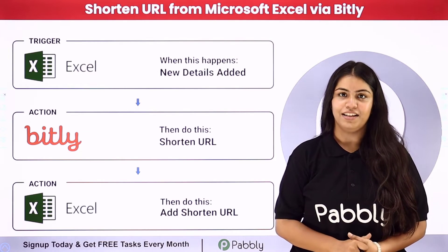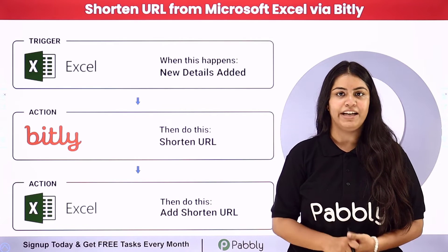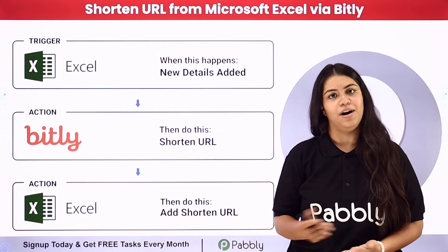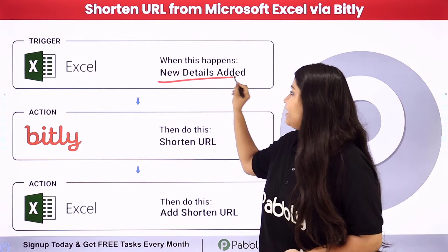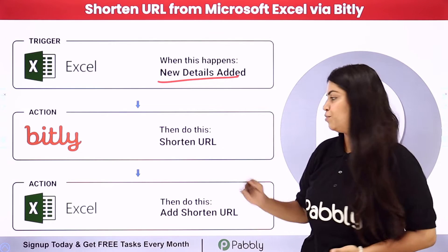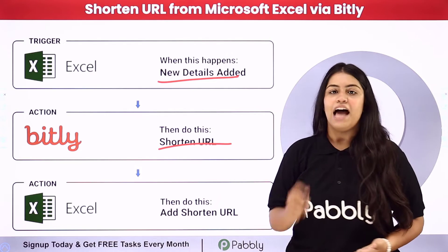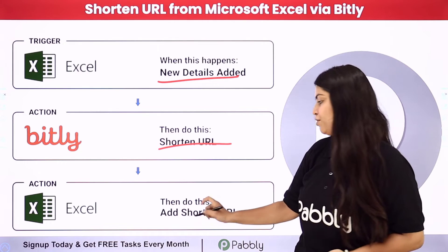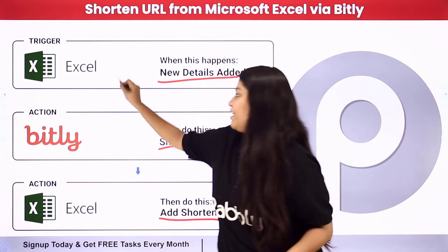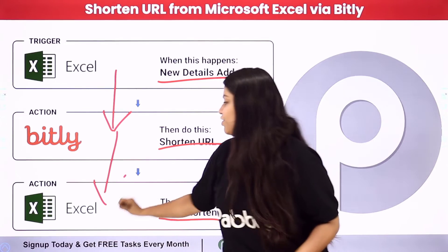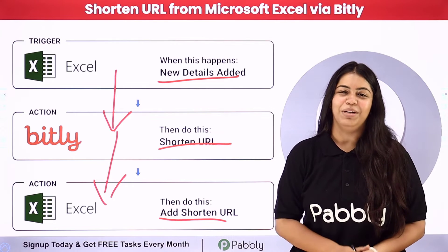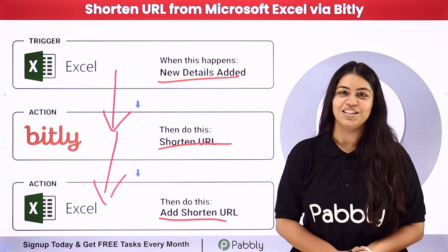I am running a YouTube channel and I am adding the details of my video in my Microsoft Excel sheet, like the video title and the video URL. I wish that as soon as I add new details in my Microsoft Excel sheet, automatically my video URL should be shortened with the help of Bitly and added to another sheet in my Microsoft Excel. For this we are going to create a connection between Excel, Bitly and then Excel, using Pabbly Connect — an amazing automation software.